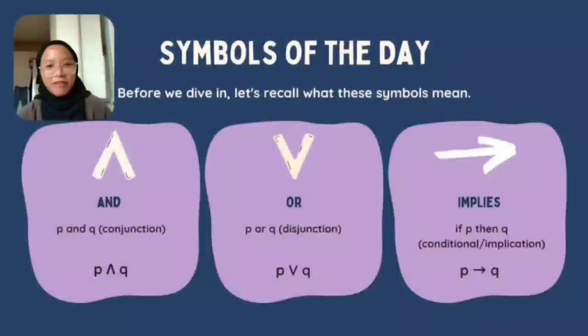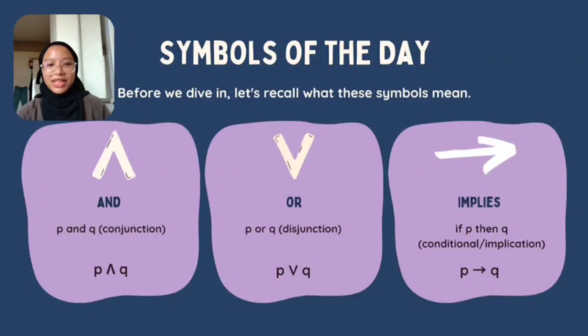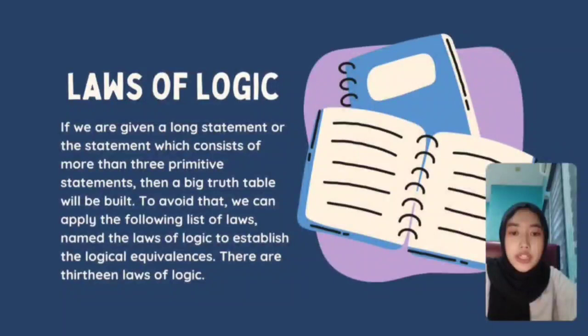Let's record what all the symbols mean. We have the backward V, the V, and the arrow. The backward V symbolizes AND, which is conjunction, for P and Q. The V is used for disjunction, or, so it becomes P or Q. The arrow means implies, or if-then, so it becomes P implies Q.